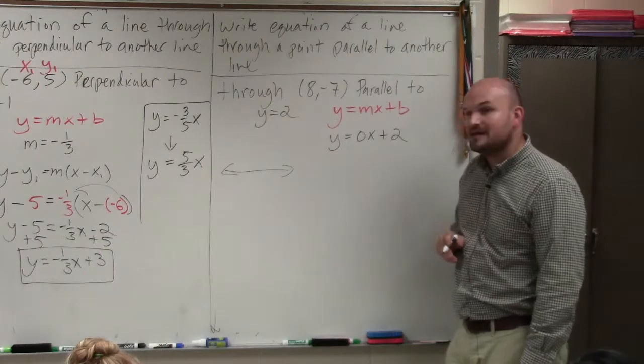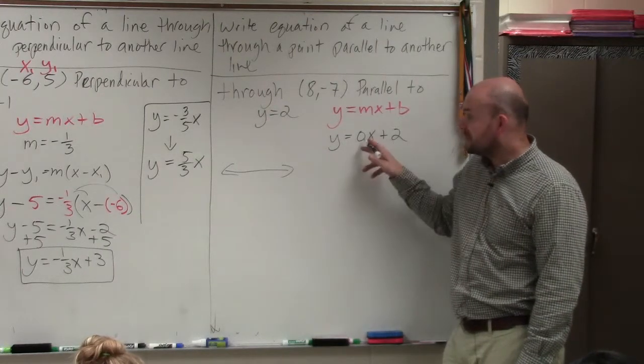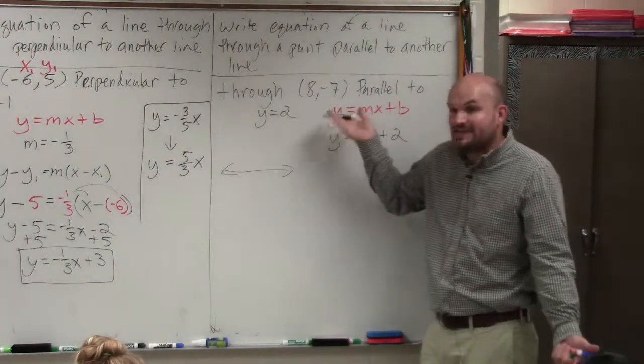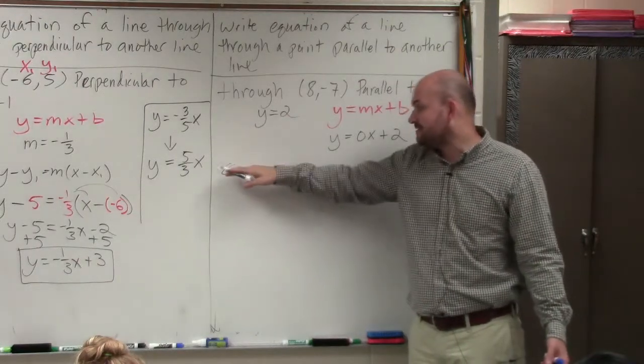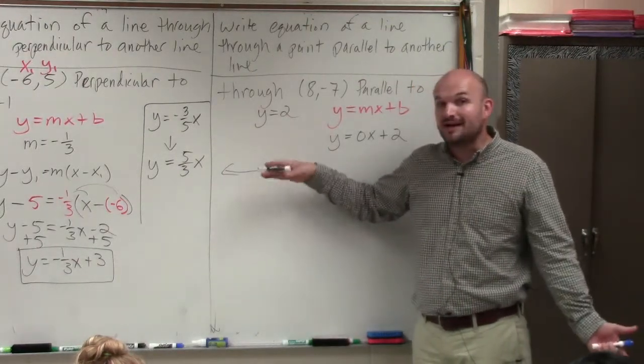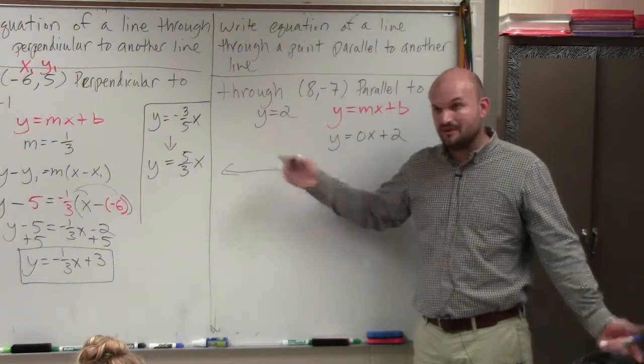So y equals 0 times x plus 2. That's going to be our slope. So therefore, we know that if this line's horizontal, our new line also has to be horizontal.